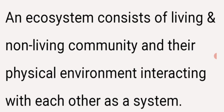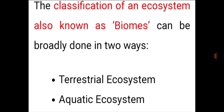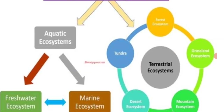The next topic we are going to study is the types of ecosystem. An ecosystem consists of all the biotic and abiotic community and their physical environment interacting with each other as a system. The classification of an ecosystem, also called a biome, can broadly be done in two ways: the terrestrial ecosystem and the aquatic ecosystem. Terrestrial refers to land, and aquatic refers to anything relating to water.